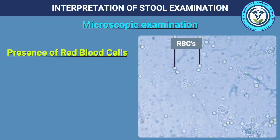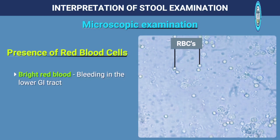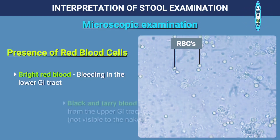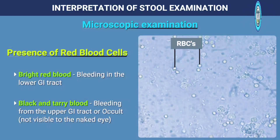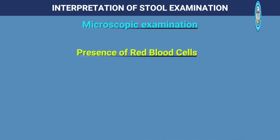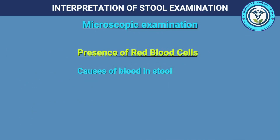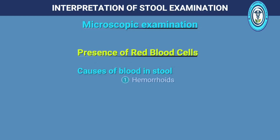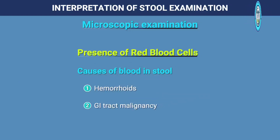Blood in stool can be bright red from bleeding in the lower gastrointestinal tract, or black/tarry from bleeding from the upper gastrointestinal tract, or occult which is not visible to the naked eye. Causes of blood in stool can be hemorrhoids, GI tract malignancies and dysentery.